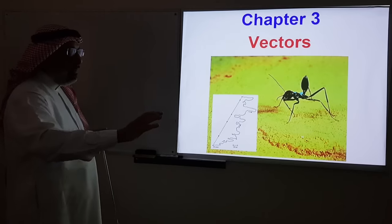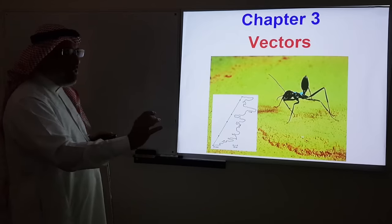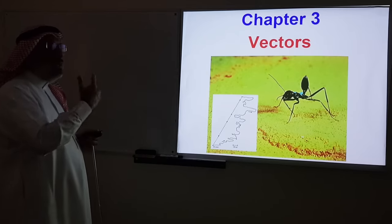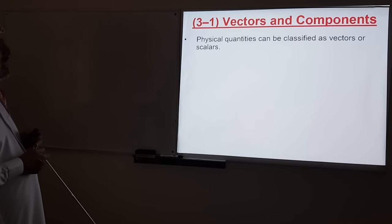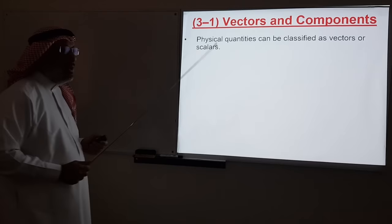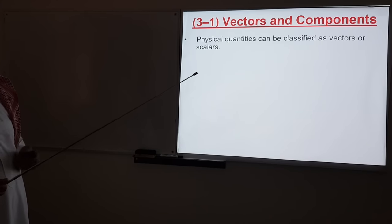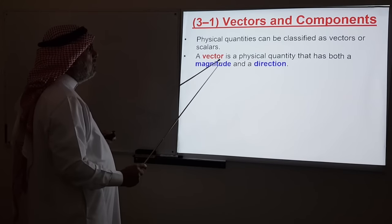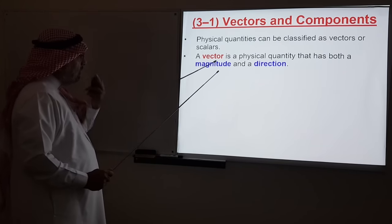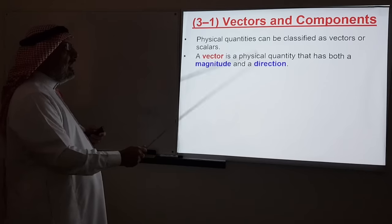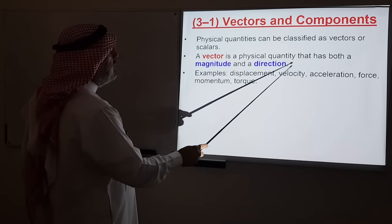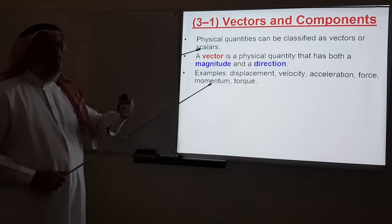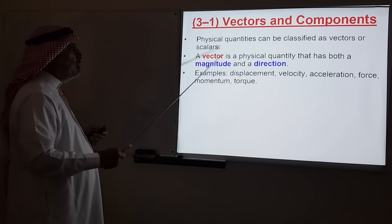That's why we take a diversion here in Chapter 3, which is purely mathematical, but it will enable us to deal with the more general motion in three dimensions in the next chapter. Physical quantities can be classified as Vectors or Scalars — these are the two types. A vector is a physical quantity that has both magnitude and direction. Examples include displacement, velocity, acceleration, force, momentum, and torque.